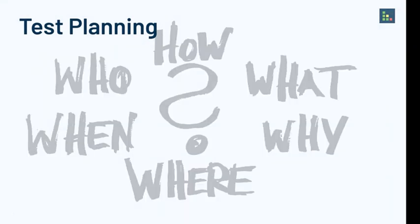A useful heuristic device that has helped me when thinking about my test plan is to think about the five W's — what, where, who, why, and when. And actually there are six, because I like to add 'how' in there as well, and from a test planning perspective that's kind of a necessity.